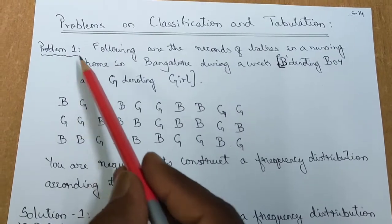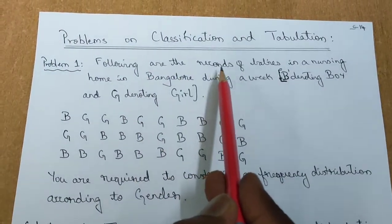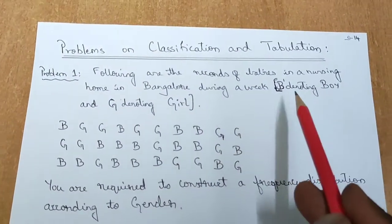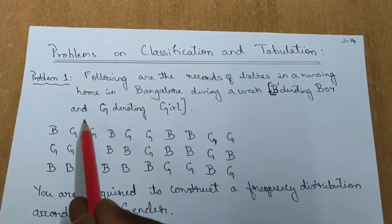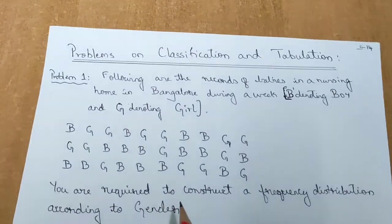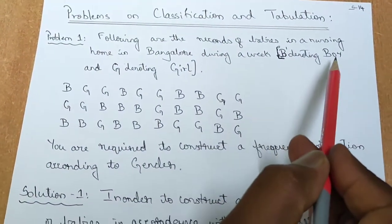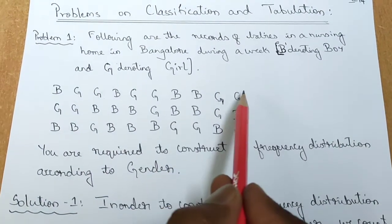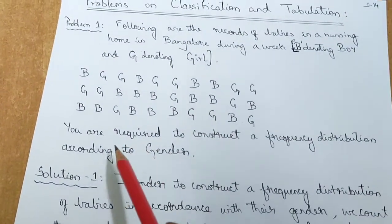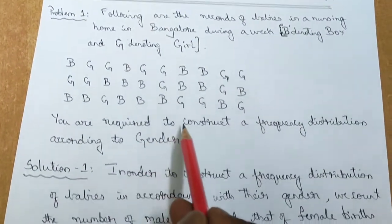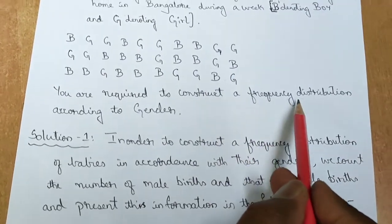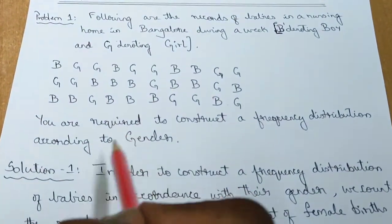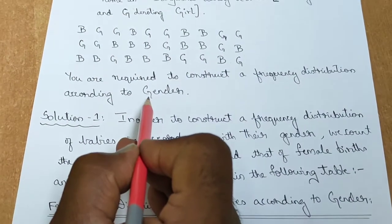Let us look into the first problem which says: following are the records of babies in a nursing home in Bangalore during a week. B denoting boy and G denoting girl. You are required to construct a Frequency Distribution according to gender. So the characteristic on the basis of which we are going to classify is the gender.